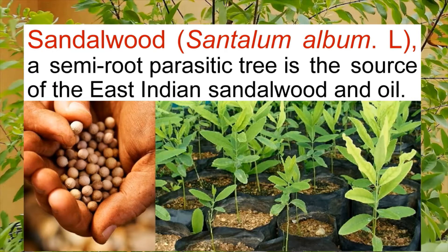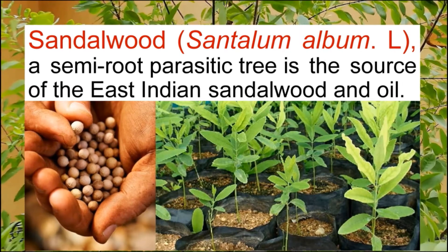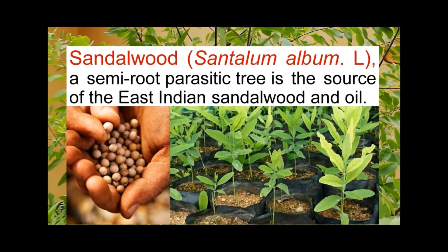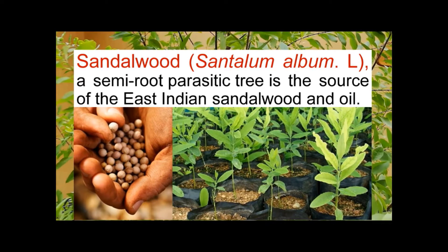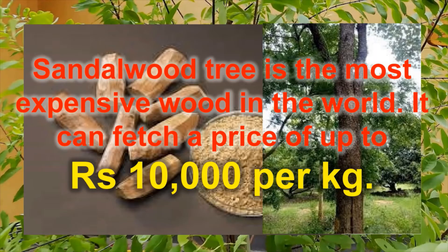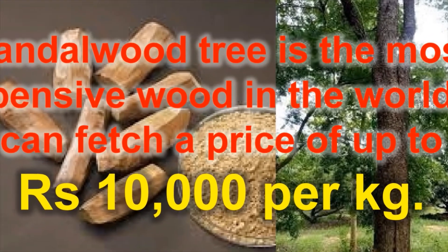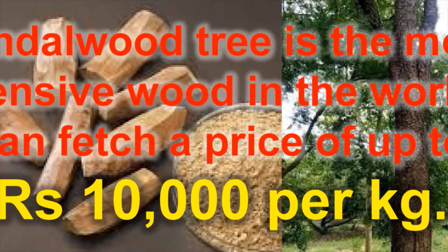Sandalwood, botanically called Santalum album, is a semi-root parasite and it is the source of the famous sandalwood and sandalwood oil, for which Karnataka and India are very well known worldwide. Sandalwood is one of the most expensive trees and woods in the world — one kg of wood at present costs about 10,000 rupees. This sandalwood is affected by a disease called sandal spike disease, and there are two forms of this disease.